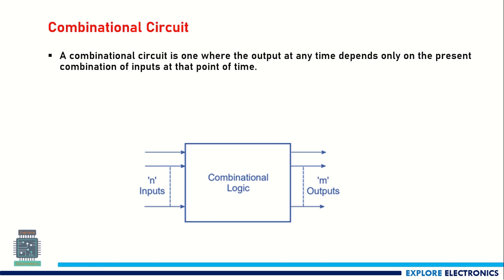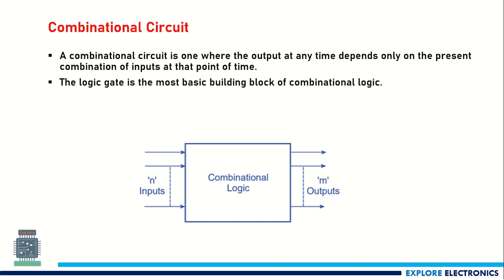The m outputs can be a single output or multiple outputs. Similarly, inputs can be a single input or multiple inputs. The key thing is that the output depends on the present inputs being applied. If we change the inputs, the output will also change at that particular time.